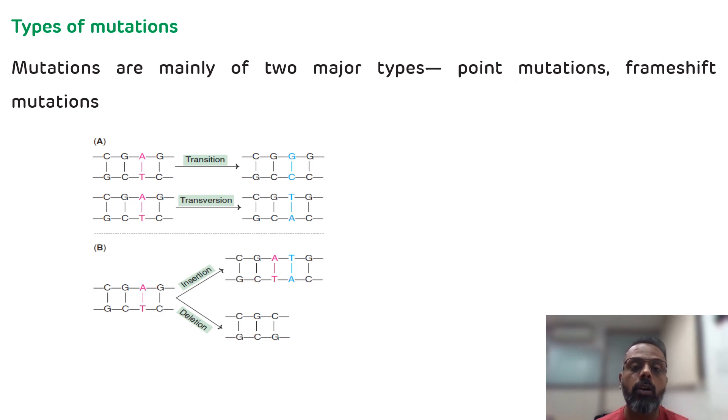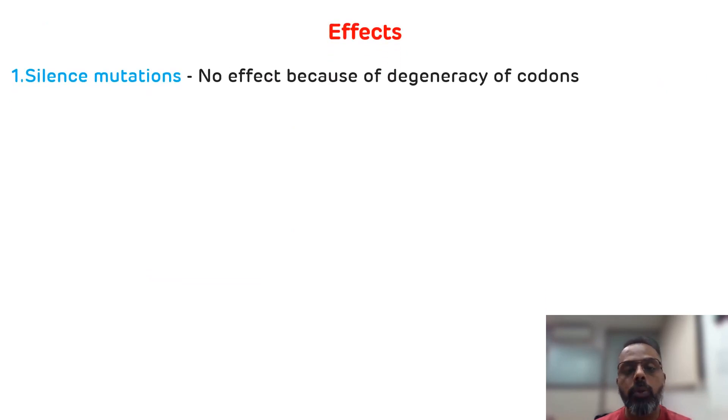Now what are the effects of mutation? The first one is the silent mutation. Silent mutation means there is no effect of mutation. This is because of degeneracy of codons.